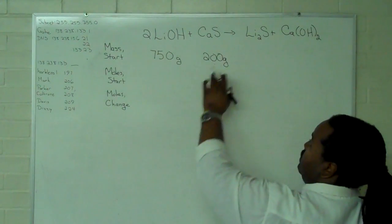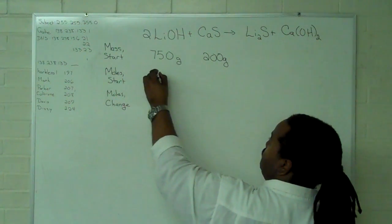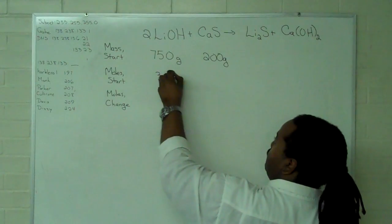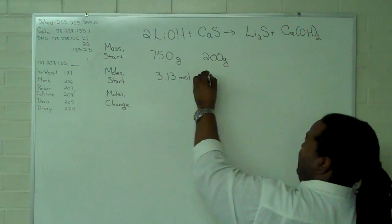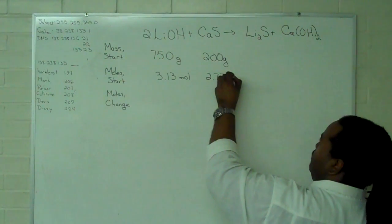So we have starting masses, and our moles to start with are 3.13 moles and 2.77 moles.